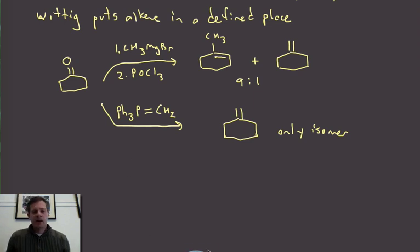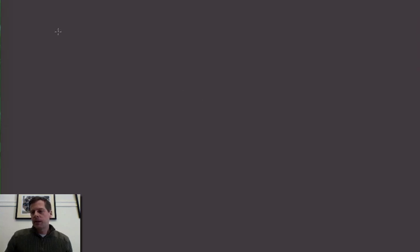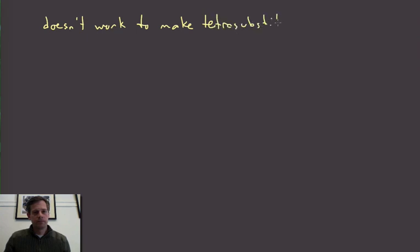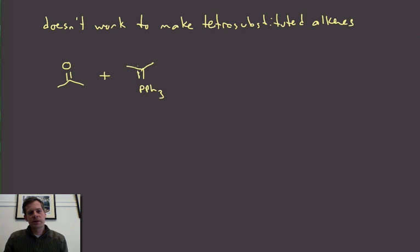Okay now a couple of points here. The Wittig doesn't work to make tetrasubstituted alkenes. Okay so if I were to take a ketone and then I had a phosphorus ylid that was disubstituted on the carbon that is just actually going to be too hindered in the intermediates and I'm not going to be able to make a tetrasubstituted alkene. So that reaction just isn't going to go forward.